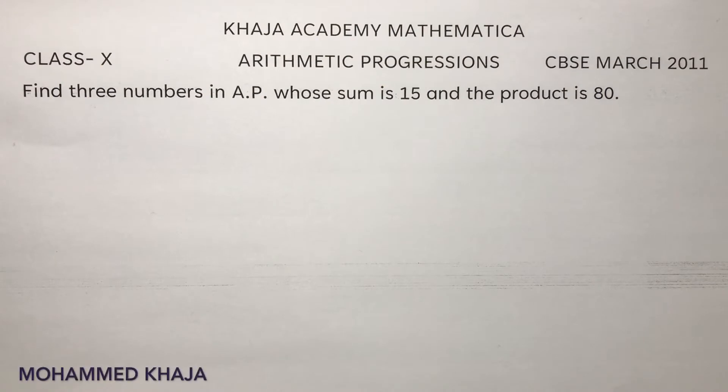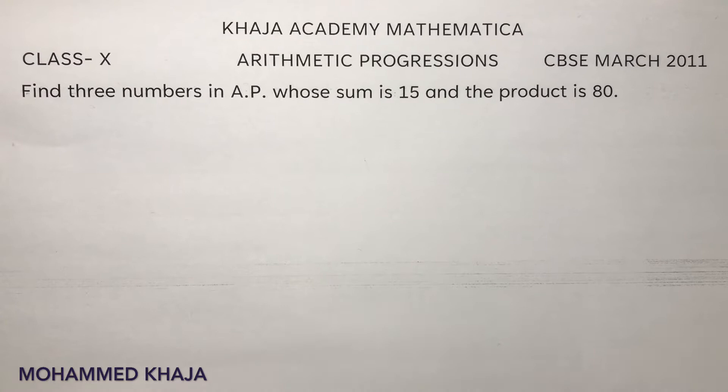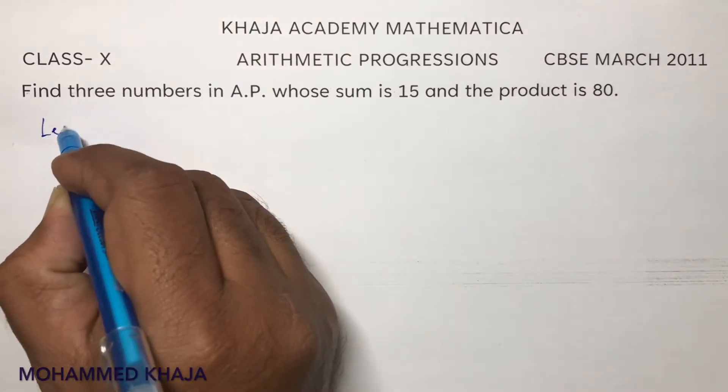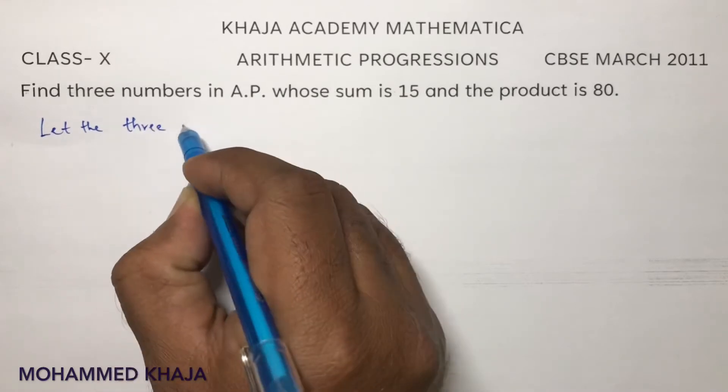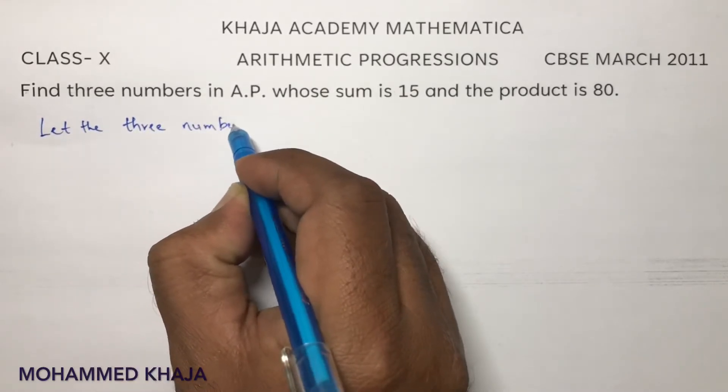Find three numbers in AP (arithmetic progression) whose sum is 15 and the product is 80. So here, let the three numbers be, let the three numbers in AP be...